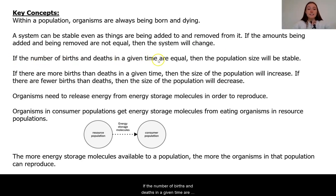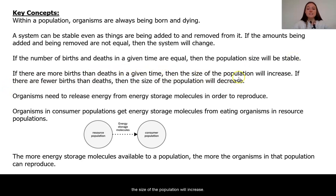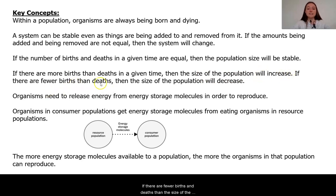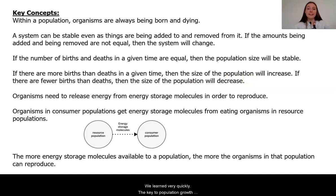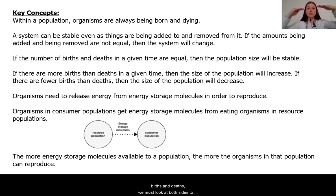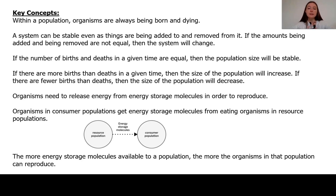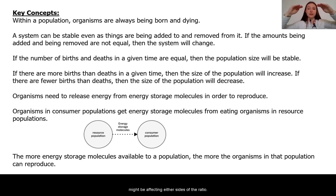If the number of births and deaths in a given time are equal, then the population size will be stable. If there are more births than deaths in a given time, the size of the population will increase. If there are fewer births than deaths, the population will decrease. The key to population growth or stability is in the ratio of births and deaths. We must look at both sides to understand and make predictions about what is happening in a population, which led us to start diving into what might be affecting either side of the ratio.